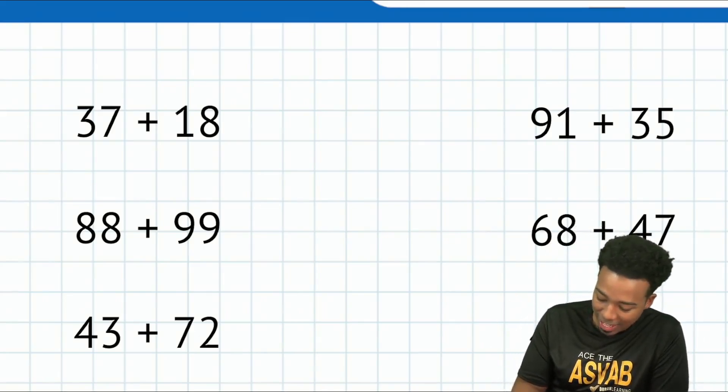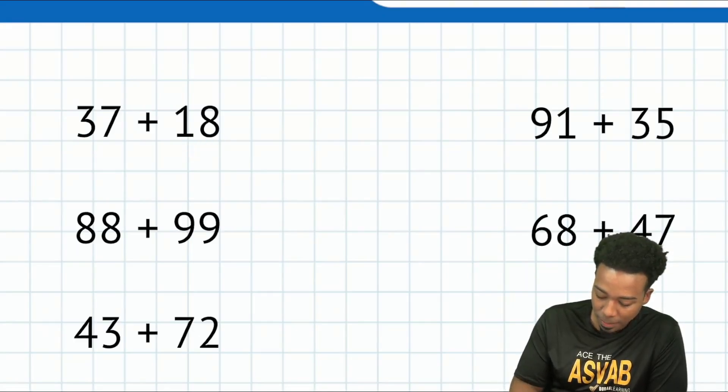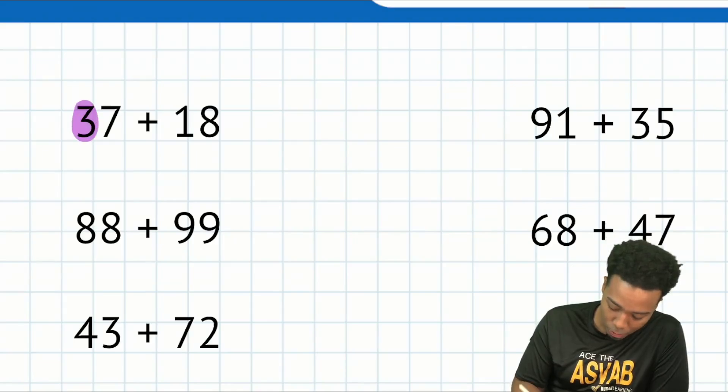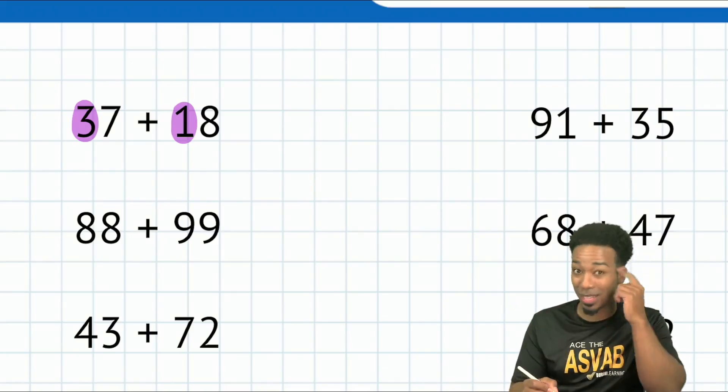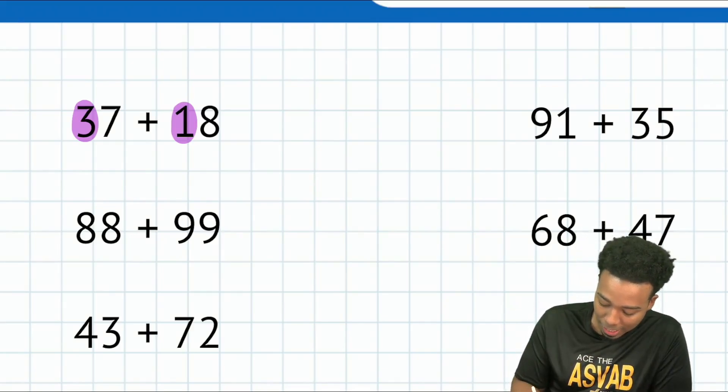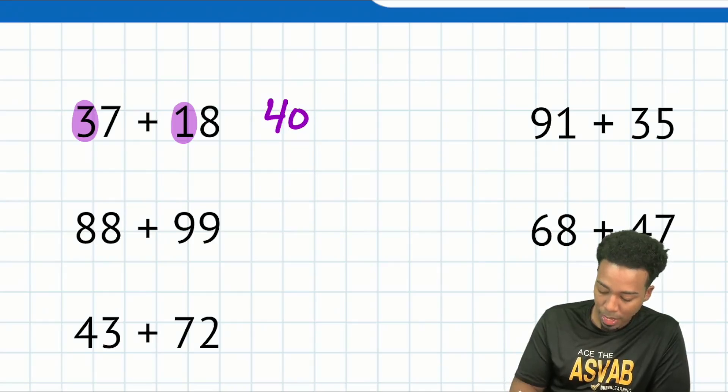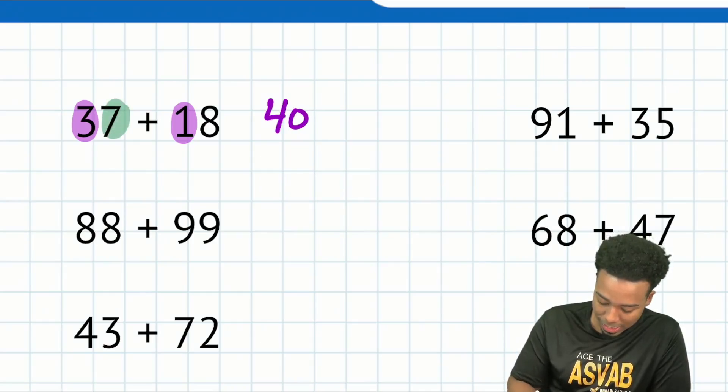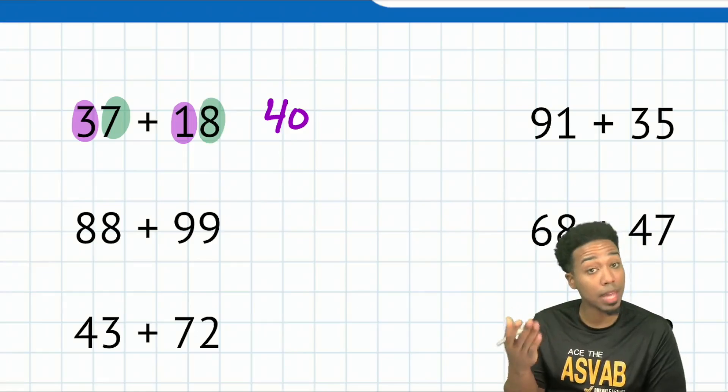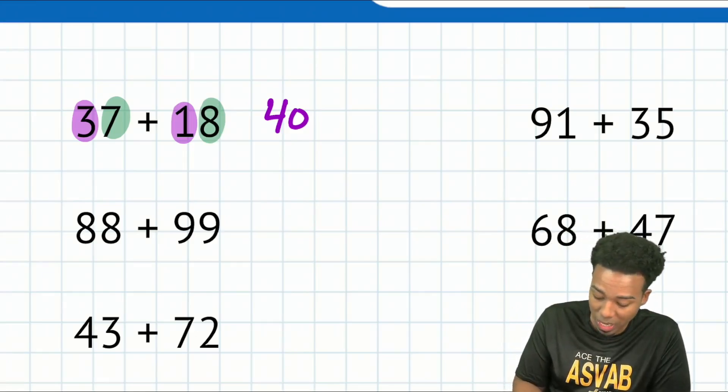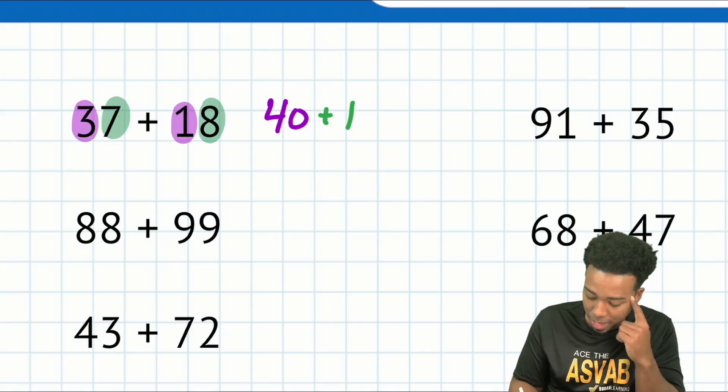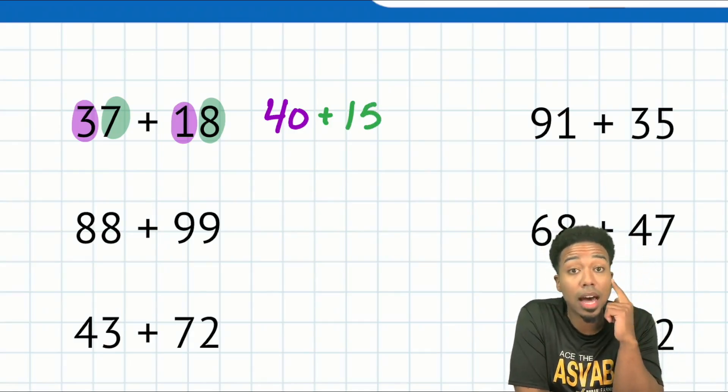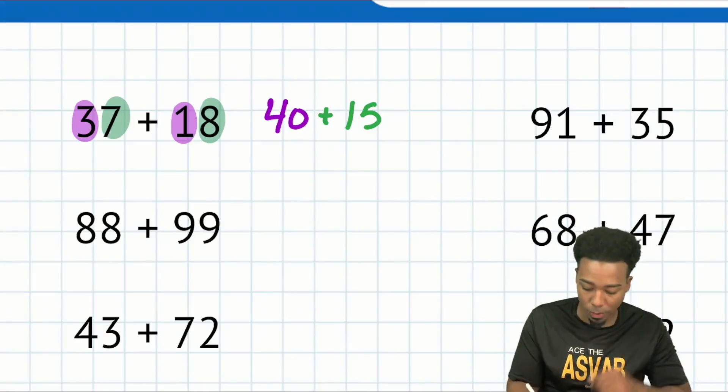If we're adding 37 and 18, I'm going to treat it like this. I'm going to think about 30 plus 10, which in my head, that's going to be 40. Also, when we take a look at 7 plus 8, that's going to be 15. So we essentially have in my head 40 plus 15. Isn't that a lot easier to think about? 40 plus 15, that's pretty easy. That's 55 and we're done.